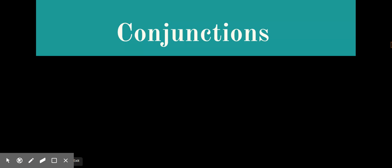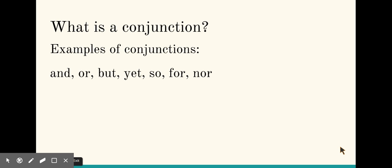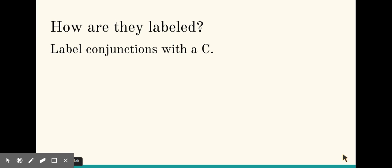Okay, today we're going to talk about conjunctions. What is a conjunction? A conjunction joins words or sentences together. Examples of conjunctions are and, or, but, yet, so, for, and nor.